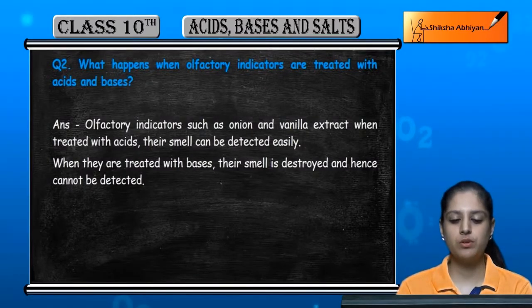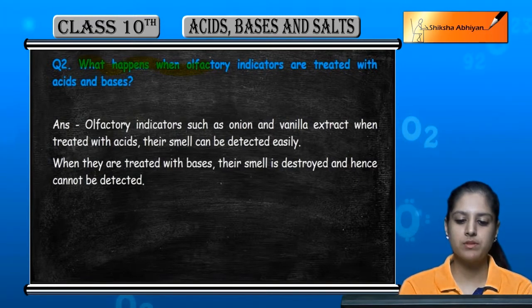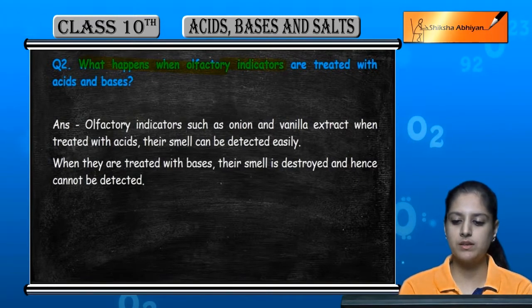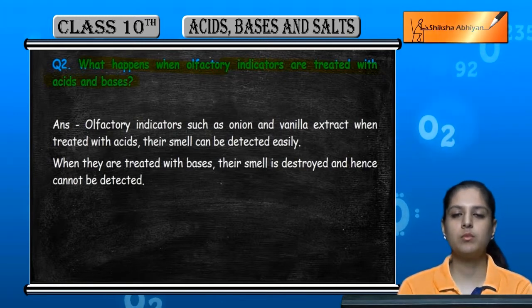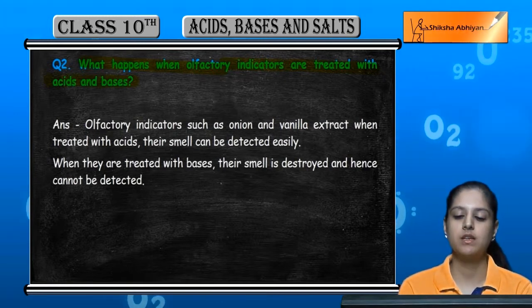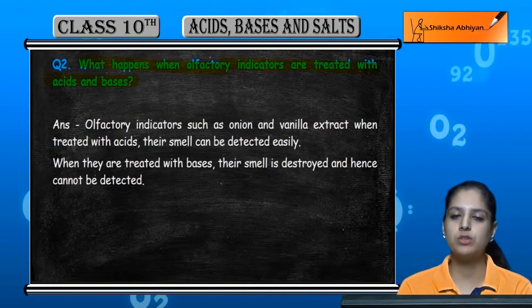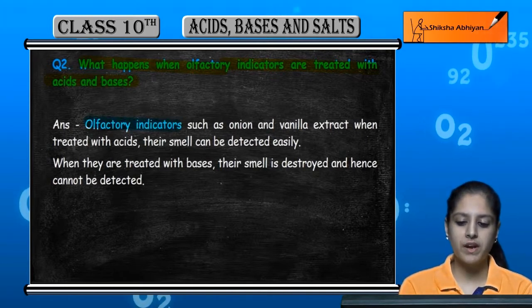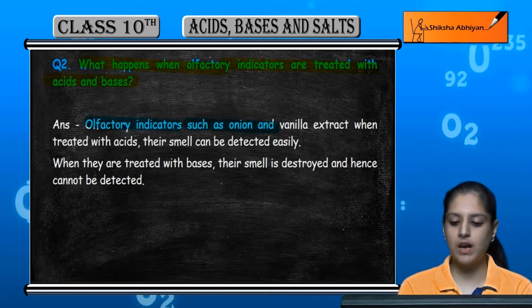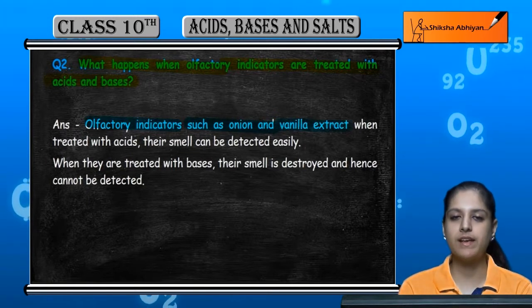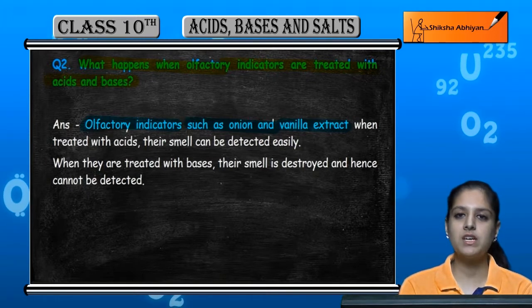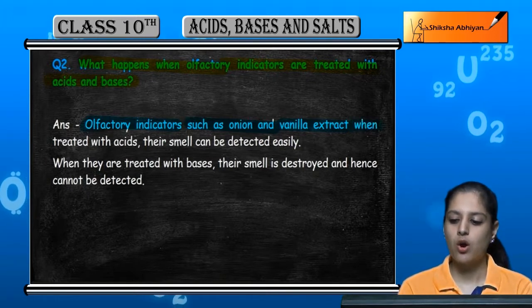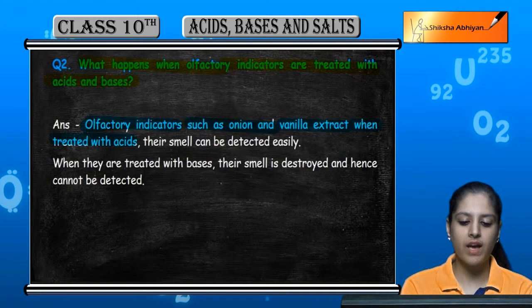Question number two: what happens when olfactory indicators are treated with acids and bases? When olfactory indicators like onion extract or vanilla extract are treated with acid or base, there are observable changes in their smell.